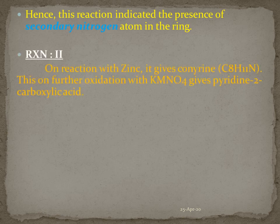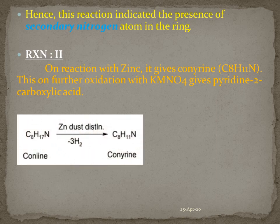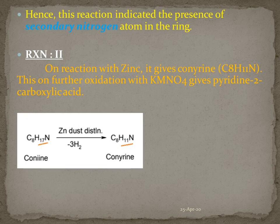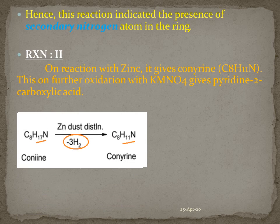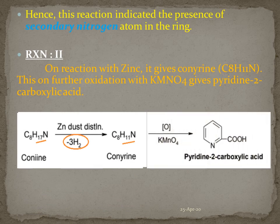Now we are going to carry out the second reaction. In this reaction, conine is distilled with zinc. It gives conirine of molecular formula C8H11N, which on further oxidation with potassium permanganate gives pyridine-2-carboxylic acid. Conine has 17 hydrogens whereas conirine has only 11 hydrogens, which means 6 fewer hydrogens — or 3 fewer molecules of hydrogen — than conine. Conirine oxidizes with potassium permanganate to give pyridine-2-carboxylic acid.